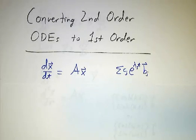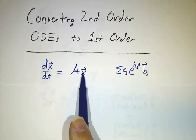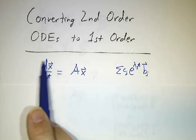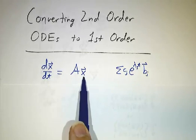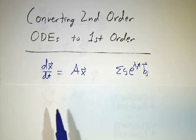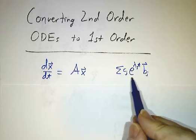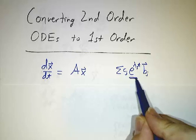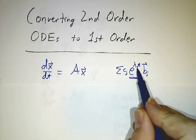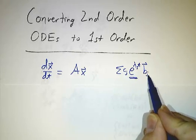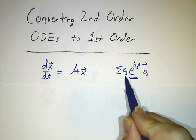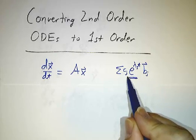So if you've got a system of first-order linear differential equations, the derivative of some vector is a matrix times that vector, we know what the solutions look like. They're linear combinations of exponentials of the eigenvalue, e to the lambda t, times the eigenvectors. And then you have some coefficients that are related to your initial conditions.